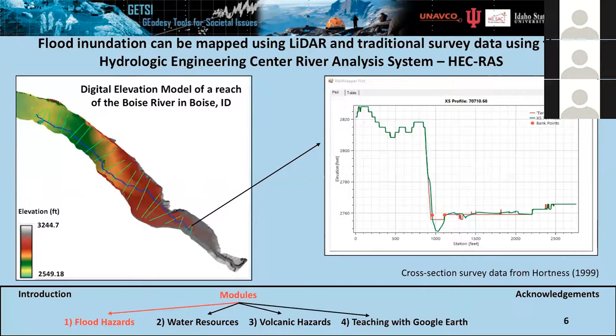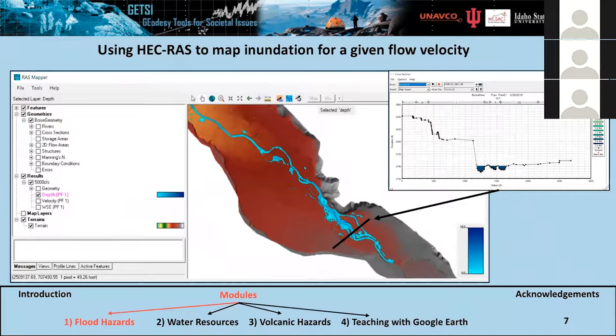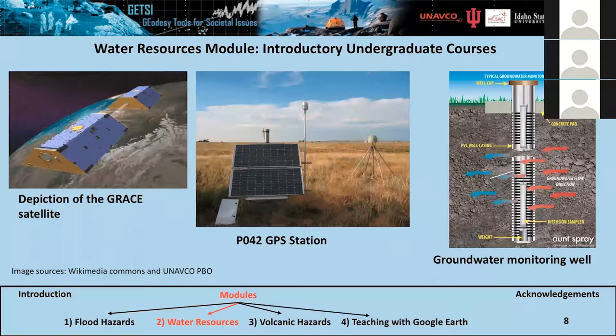Here is an example of the HEC-RAS model being run. My task was to write instructions and prepare the data. This model can tell us the extent of flood inundation for a specific flow rate — in this case, 5,000 cubic feet per second. On the right side we can see a cross section showing the water flow depth.